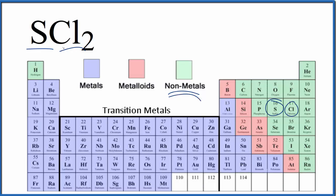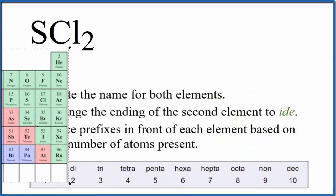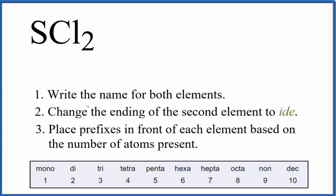That means this is going to be a covalent, also called a molecular bond. So we can use these rules here to write the name for SCL2. First we'll write the name for both elements. That's the sulfur and the chlorine.